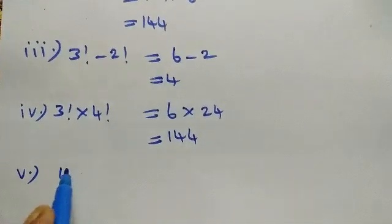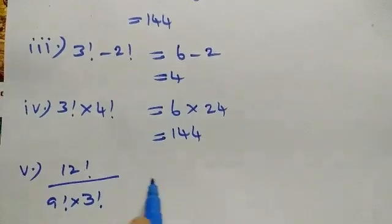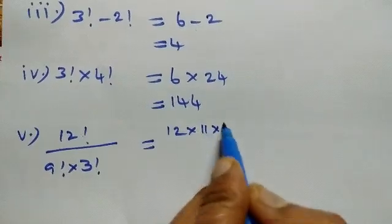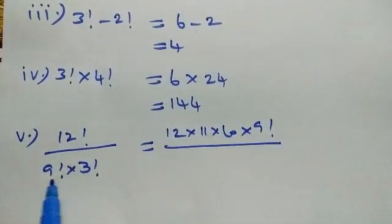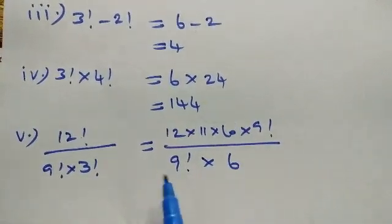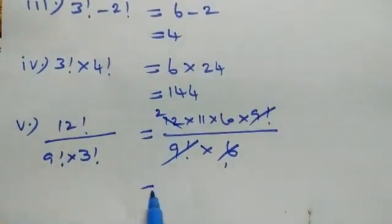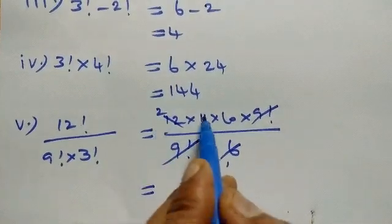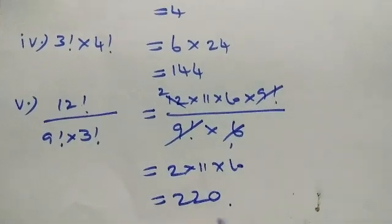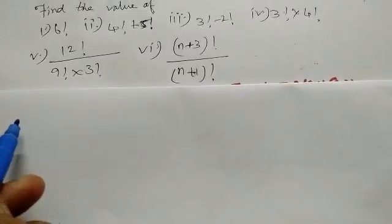Fifth one: 12 factorial divided by 9 factorial into 3 factorial. 12 factorial is 12 and 11 and 10 and 9 factorial, all divided by 9 factorial into 3 factorial, which is 6. 9 factorial cancels, 6 is 2 times 3, so the remaining is 2 into 11 into 10, which equals 220.